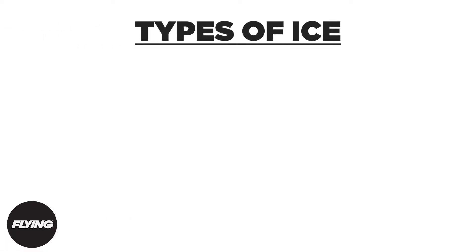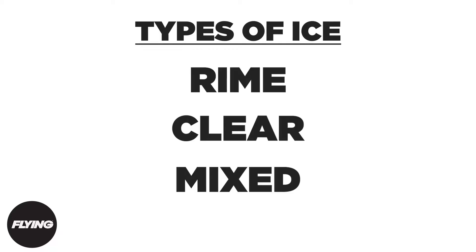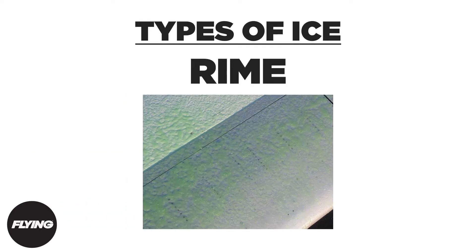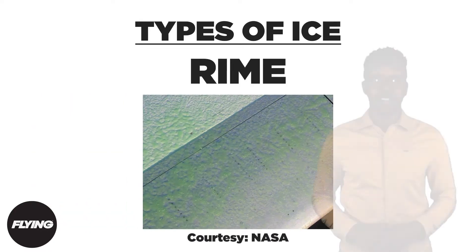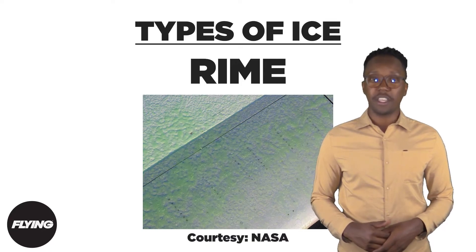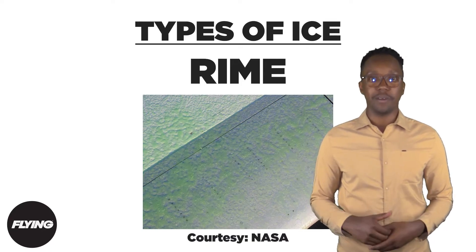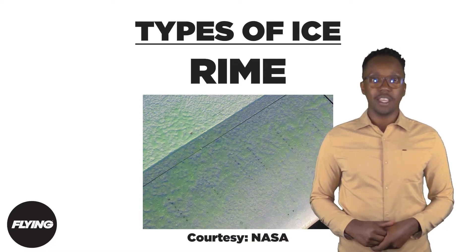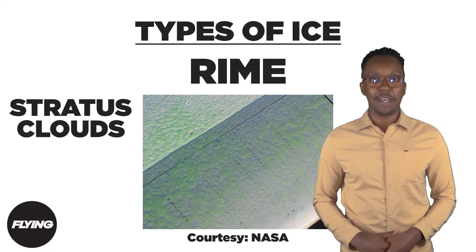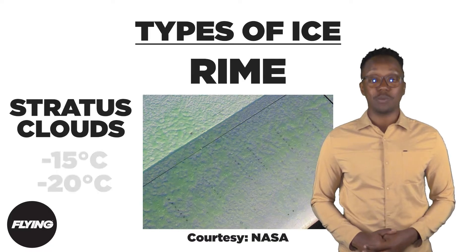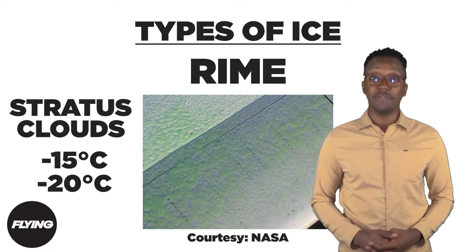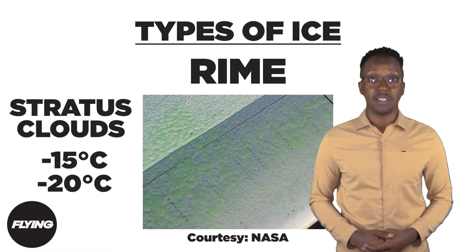Generally, there are three types of ice that can accumulate on your aircraft: rime, clear, and mixed. Rime ice forms when super-cooled water droplets freeze upon contact with your aircraft. It will form brittle and rough with an opaque appearance, and can typically be found in stratus clouds with an outside ambient temperature between negative 15 and negative 20 degrees Celsius.